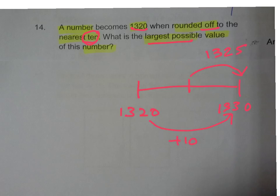From 1325 onwards, we round off and get 1330, but that's not what we want. What we want is 1320.